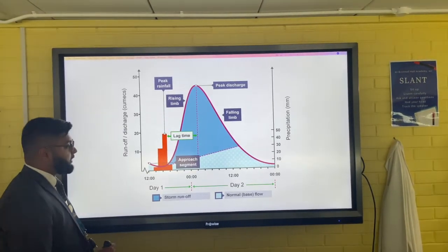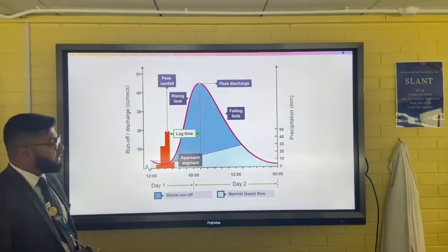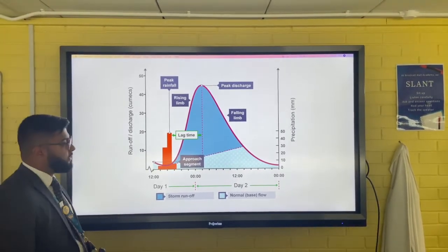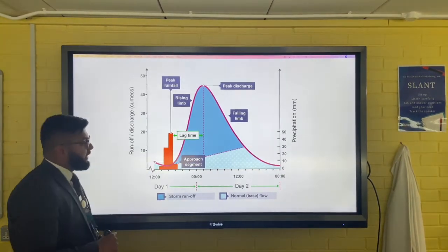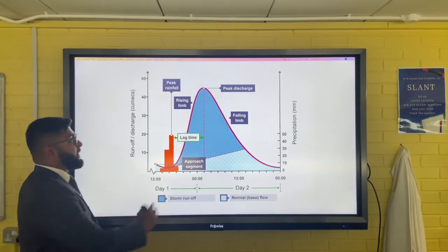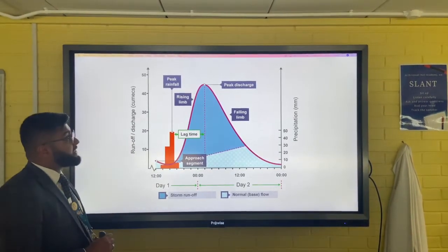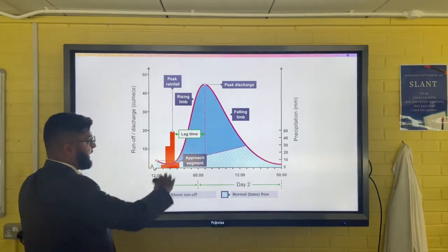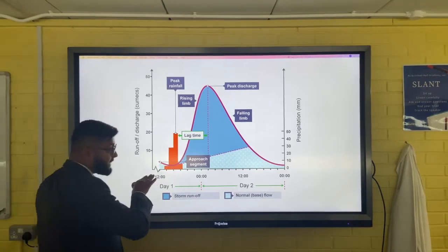You have the rising limb, which is the water moving towards and into the river channel. We then have peak discharge when the river is at its highest output or discharge in terms of cumecs. And then finally the falling limb as the river returns back to its base flow, which is its normal level.